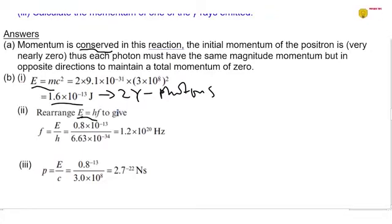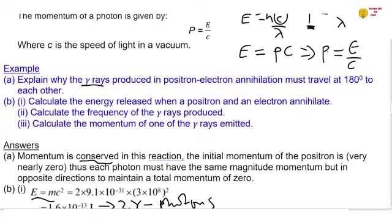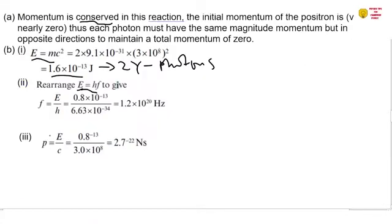Then lastly, says that calculate the momentum of one of the gamma rays emitted. So we're going to use our relation that we found here. Momentum is equal to energy over the speed of electromagnetic radiation. So momentum will be got E/c, which is 0.8 × 10⁻¹³, divided by c, giving you 2.7 × 10⁻²² newton seconds.